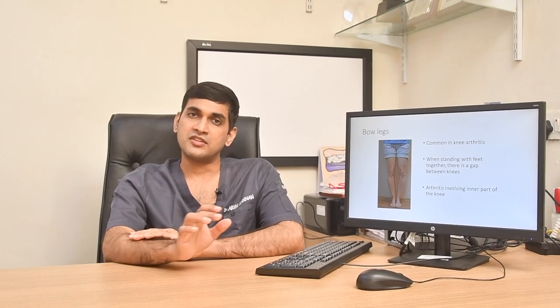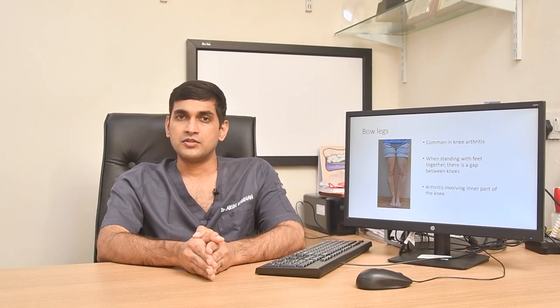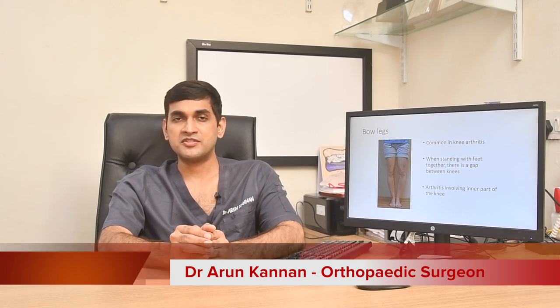The second thing is that a lot of people have a condition called bow leg deformity. It is very common and people may not notice it — it might be noticed during army selection, but generally it goes unnoticed. Bow leg means when you keep your feet together there will be a gap between the knees. This is a very common problem and many people with arthritis also have this. When you have bow legs, there is more stress on the inner part of the knee joint, and this leads to osteoarthritis.